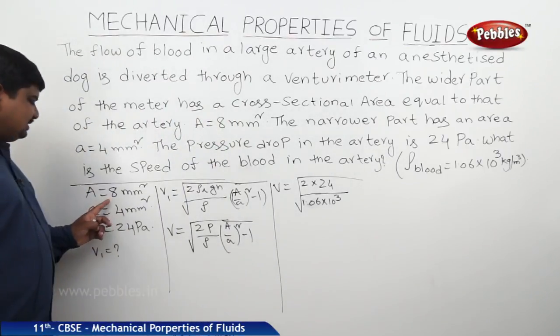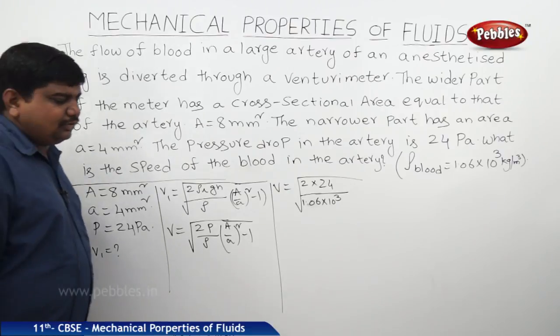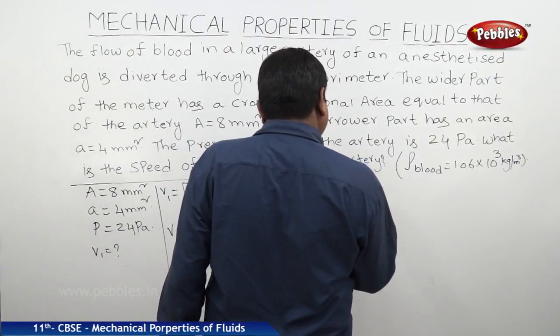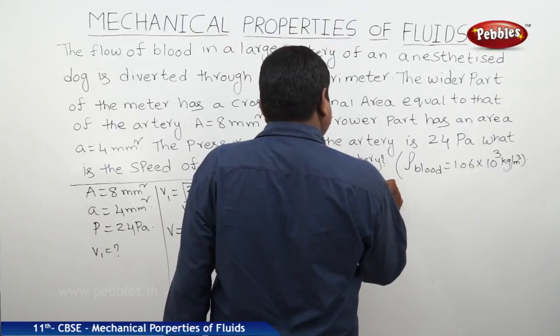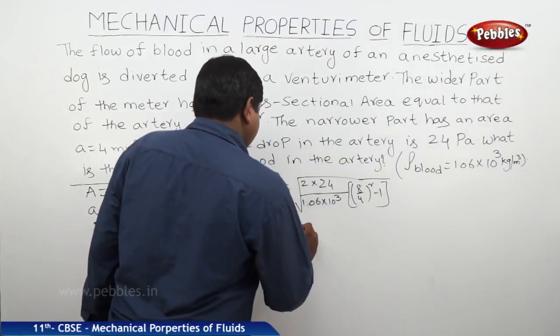A by a, where A equals 8, small a equals 4. 8 by 4 is 2 squared minus 1.